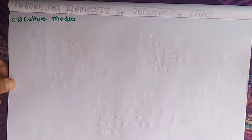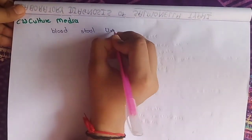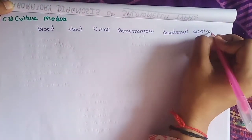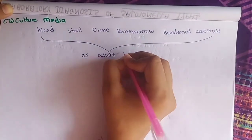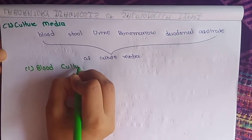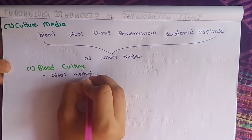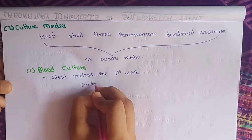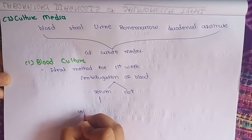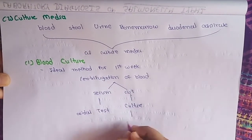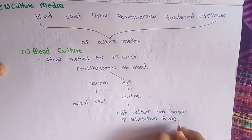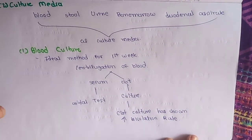Moving to culture media: specimens include blood, stool, urine, bone marrow aspirate, and duodenal aspirate. Blood culture is the ideal method for diagnosis in the first week of enteric fever. We centrifuge the blood to form serum and clot; serum is used for Widal test and clot for culture media examination. Clot culture has shown a higher isolation rate than conventional blood culture.